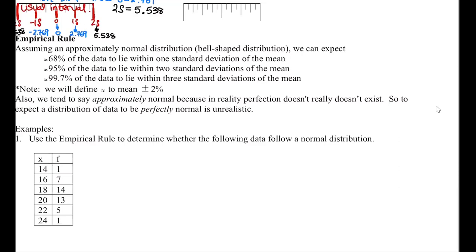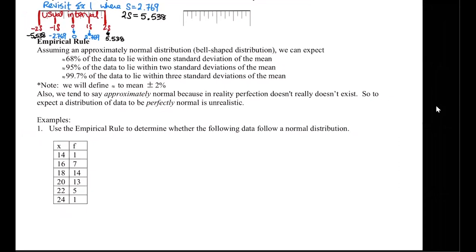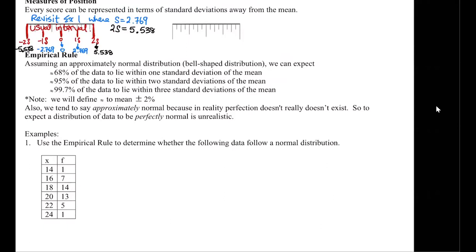We define 'approximately' to be give or take 2%. We tend to say approximately normal distribution — in reality, perfection doesn't really exist. To expect a distribution of data to be perfectly normal is unrealistic; it's just not possible. Theoretical math is the absence of outside influences in the physical world. It's all academic — they're assuming none of the physical phenomenon that exists would interfere with the study, like ignoring air resistance in physics problems.